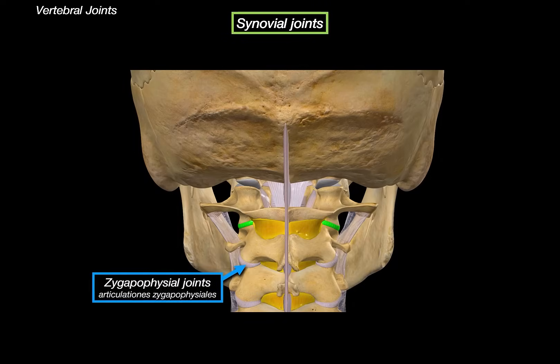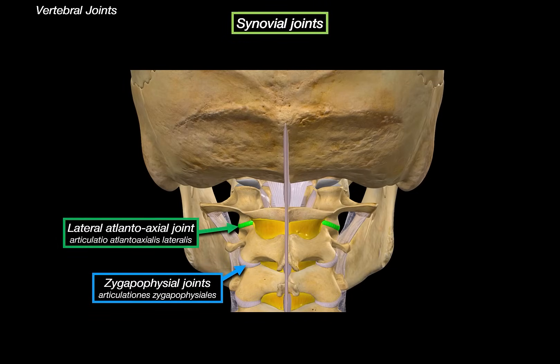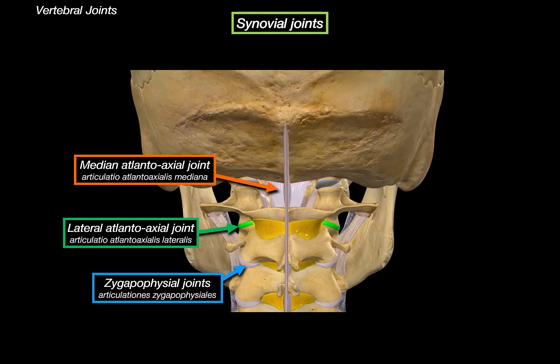Turning to the posterior view of the head, we find the atlantoaxial joints between the first cervical vertebra (the atlas) and the second cervical vertebra (the axis). There are three joints here: two lateral atlantoaxial joints and one median atlantoaxial joint. The lateral atlantoaxial joints are synovial plane joints between the inferior articular facet of the atlas and the superior articular facet of the axis, allowing gliding movement. We can also see the ligamentum flavum here for orientation.